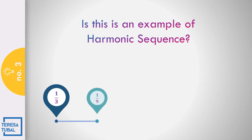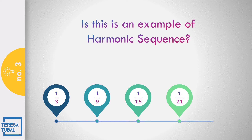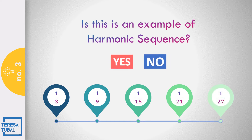How about number 3? Is 1/3, 1/9, 1/15, 1/21, and 1/27 an example of harmonic sequence? Correct — the answer is yes. The reciprocal of 1/3 is 3, the reciprocal of 1/9 is 9, and 9 minus 3 equals 6. So the common difference from the first up to the last term is 6, confirming this is a harmonic sequence.